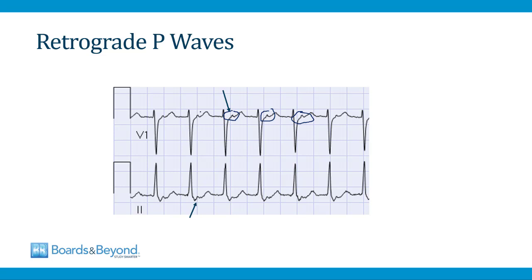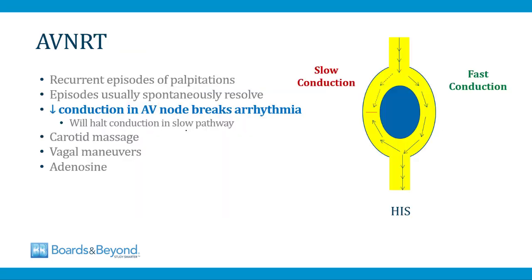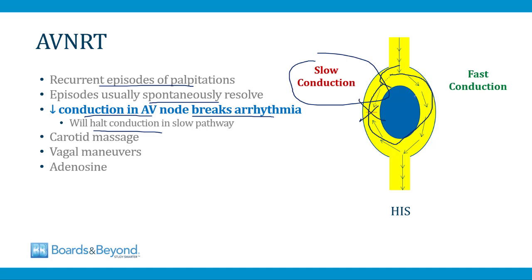The abrupt onset of a supraventricular tachycardia with retrograde P waves is AVNRT. Patients with AVNRT develop recurrent episodes of palpitations that usually spontaneously resolve. If the episode won't resolve, anything that slows conduction in the AV node will break the arrhythmia — because if you slow conduction further through the slow pathway, there will be no conduction and the circuit will break. There are three ways to slow AV node conduction: carotid massage, vagal maneuvers, and the antiarrhythmic adenosine. Adenosine administered in the emergency room can break the tachycardia and return sinus rhythm.